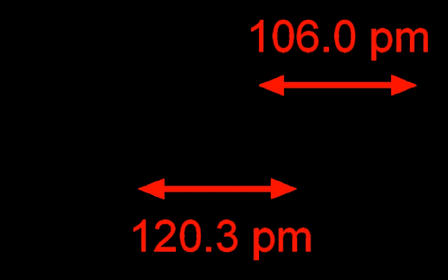Acetylene is the chemical compound with the formula C2H2. It is a hydrocarbon and the simplest alkyne. This colorless gas is widely used as a fuel and a chemical building block.